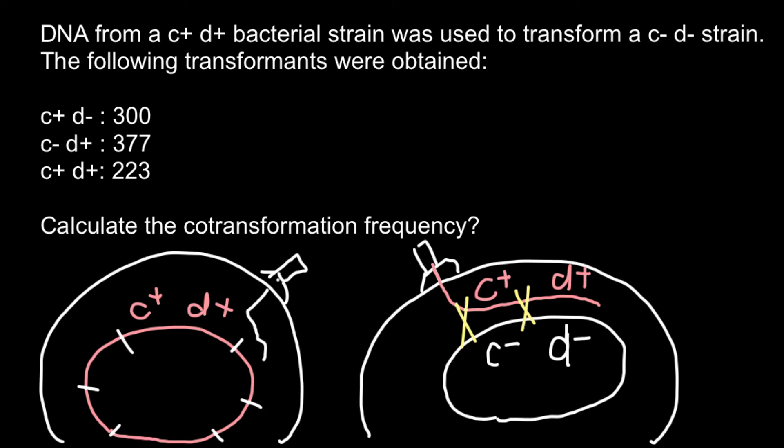Also, another variant might happen that crossing over would happen here and here. So, in this case, we would have this gene D-positive to be incorporated into the host genome and we would see genotype C-negative and D-positive.